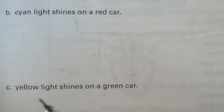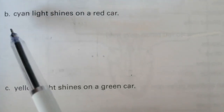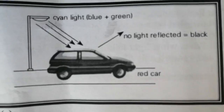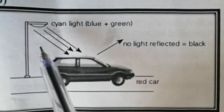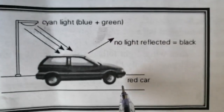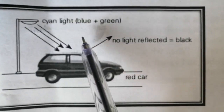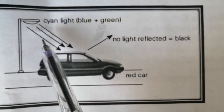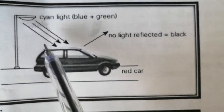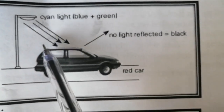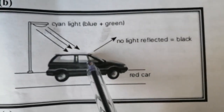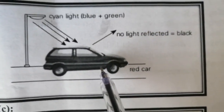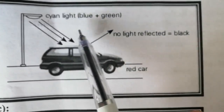Question number 10, part 2B: cyan light shines on a red car. Cyan light is the combination of blue light and green light. When it shines on a red car, the red car will absorb both blue light and green light and no light will be reflected. So the red car will appear black under the cyan light.